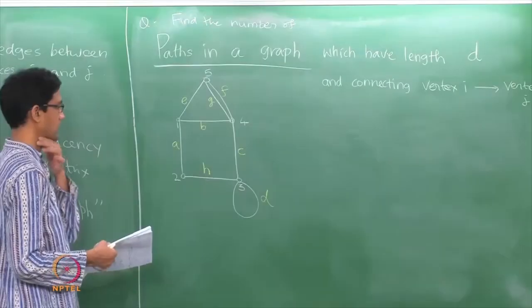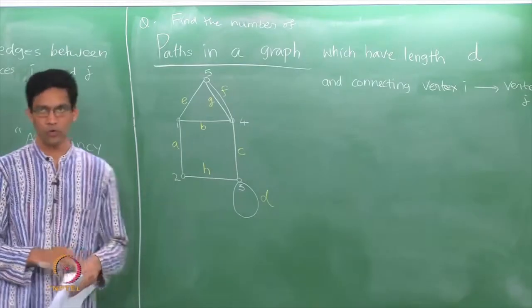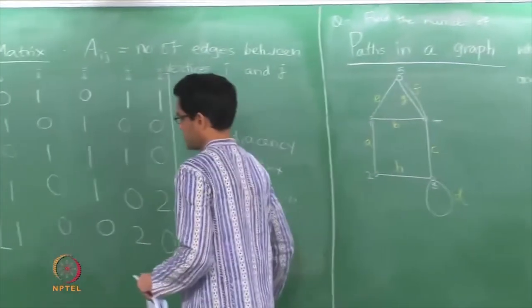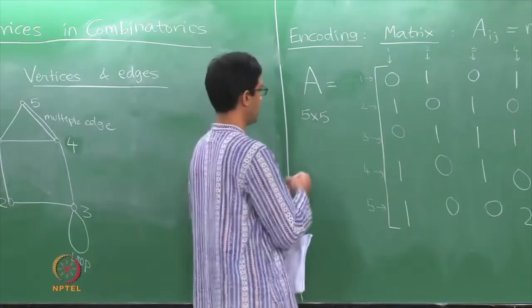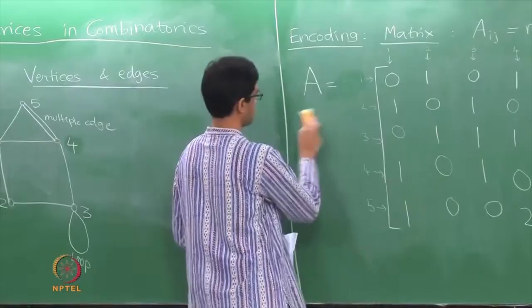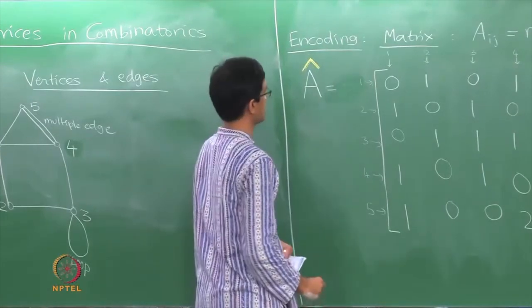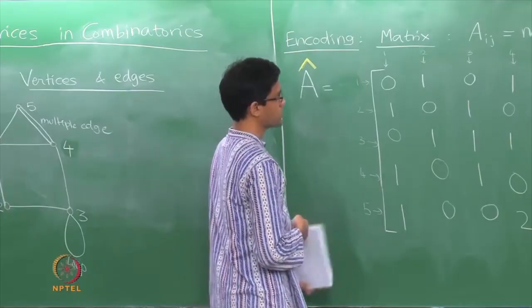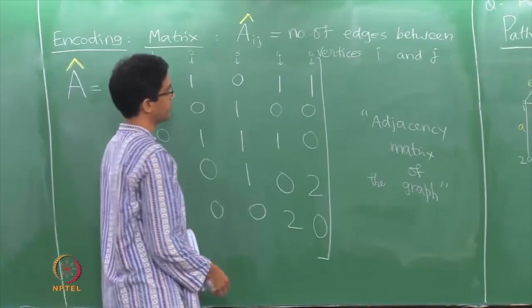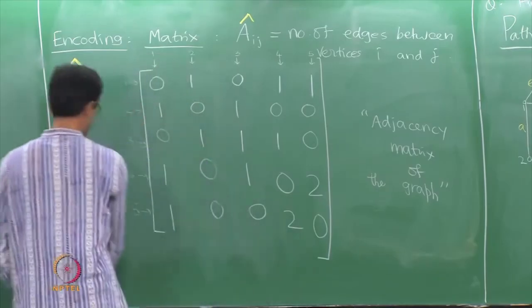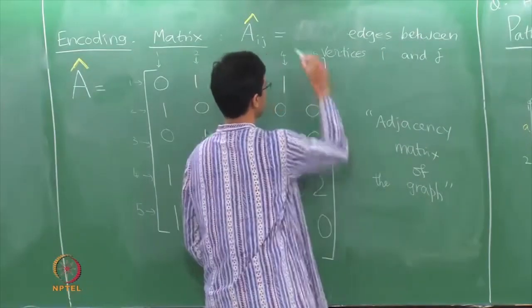Here is what we do: let us consider the adjacency matrix but with this further decoration. Let us go back to our adjacency matrix and also incorporate edge labels. Let me call this new matrix A-hat — the labeled adjacency matrix. The (i, j)-th entry of A-hat is not just going to count the total number of edges between vertices i and j, but it will sum up the edge labels. Think of A-hat(i,j) as being the sum of the labels of the edges between i and j.